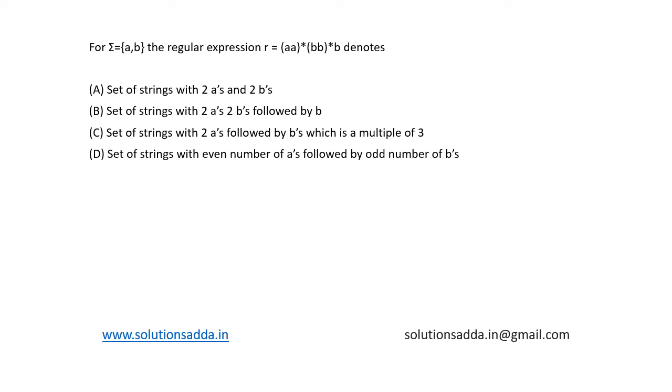This is a question from theory of computation. For sigma equal to a, b, the regular expression r equal to (aa)*(bb)*b denotes. Four options are given. Let's see each option one by one.